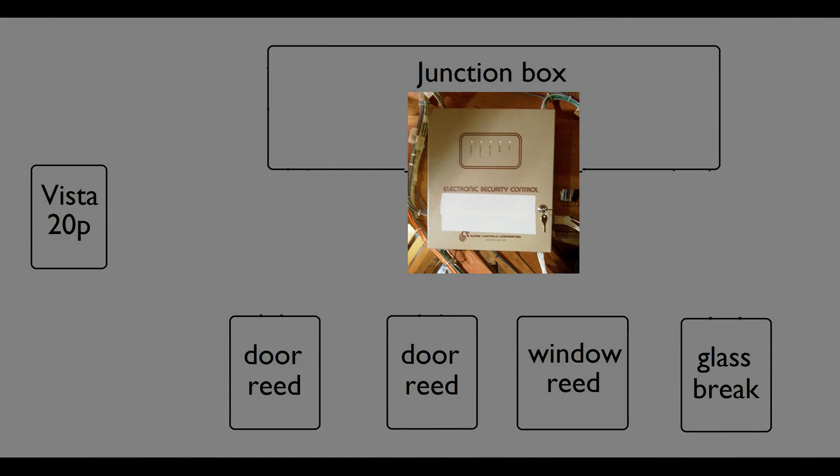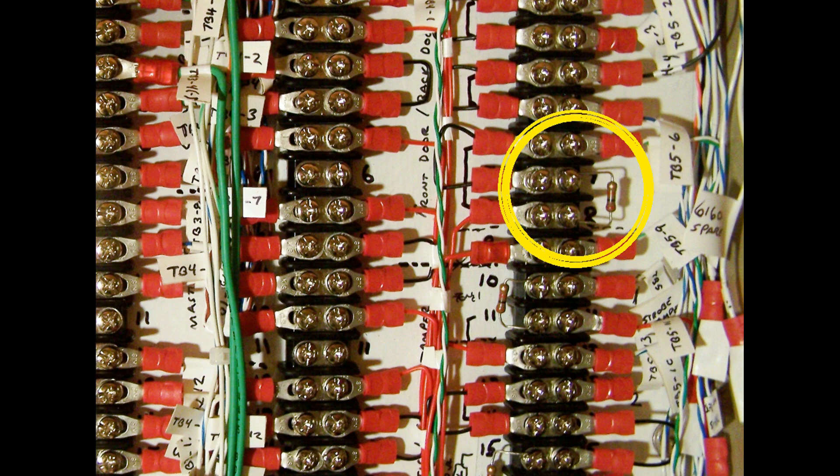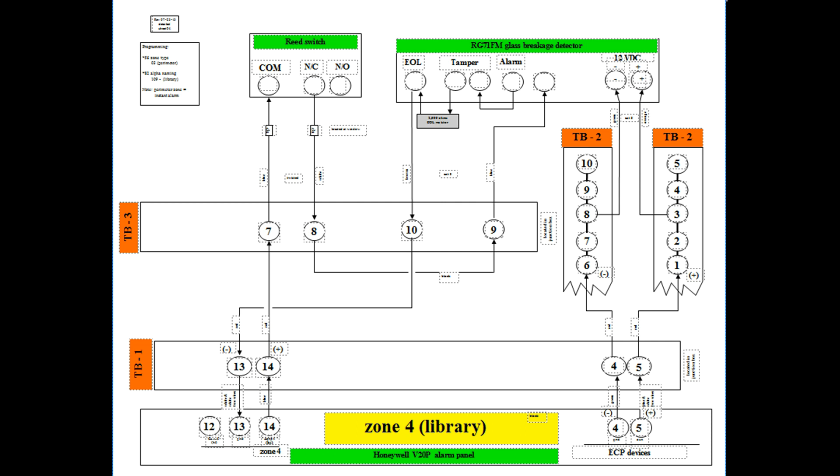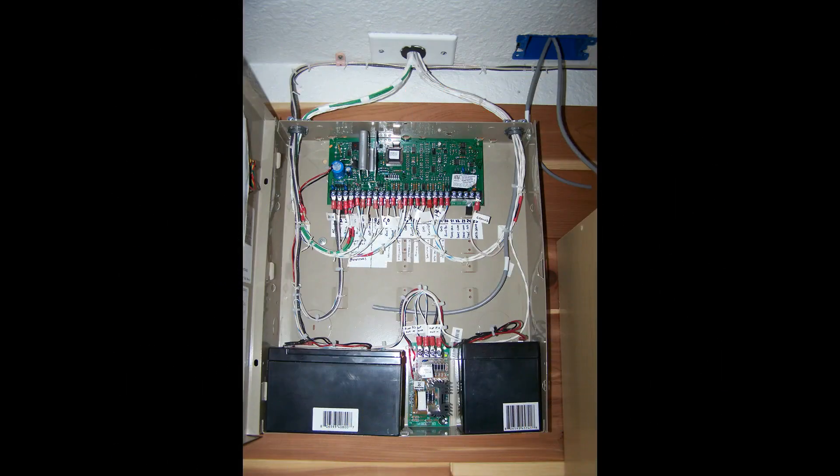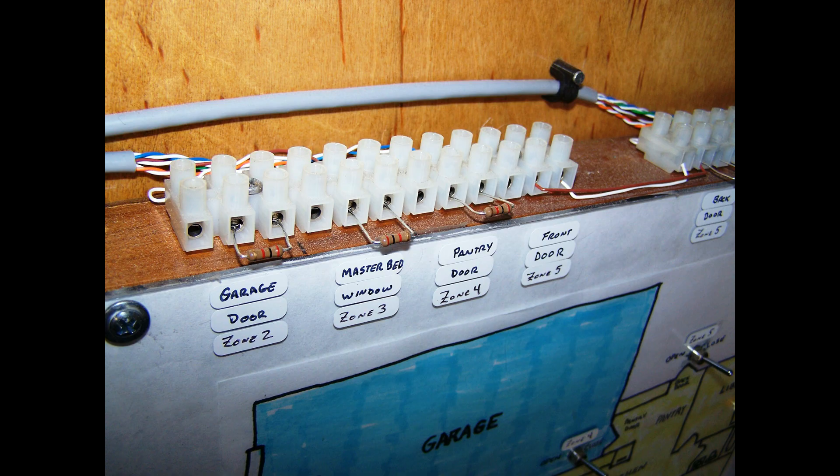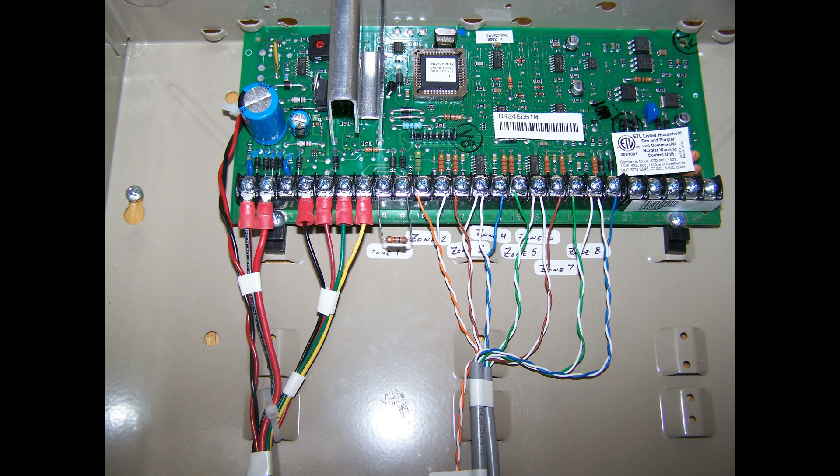If you're using a junction box in your alarm, you can install them in this box. Some types of sensors actually have a spot that allows you to install the end of line resistor on them. Just make sure it's the last sensor in the loop. You can install them inside the Vista panel itself. Using a terminal board like this one makes it a neat, easy installation. And finally, they actually sell splices. You just splice the resistor onto the wire before you hook it up to your circuit card.